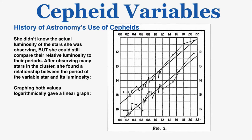She didn't know the actual luminosity of the stars, but she could compare their relative luminosity to their periods. She could observe the periods of different Cepheid variables — the time it takes them to cycle from brighter to dimmer and back — and record their relative luminosity: for example, noting that one star appears twice as luminous as another, or ten times as luminous. Even without an exact number, she could compare how luminous stars were relative to each other.